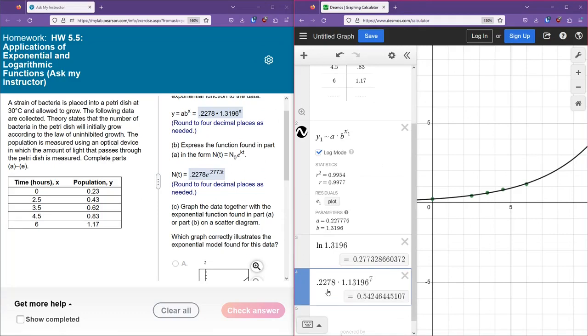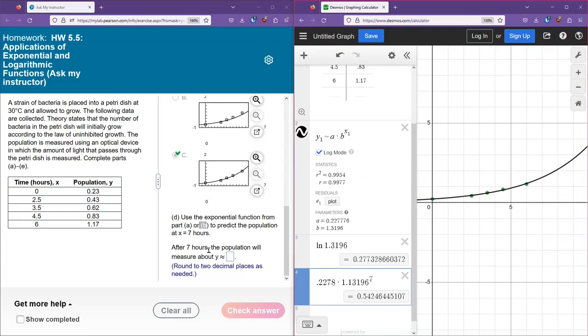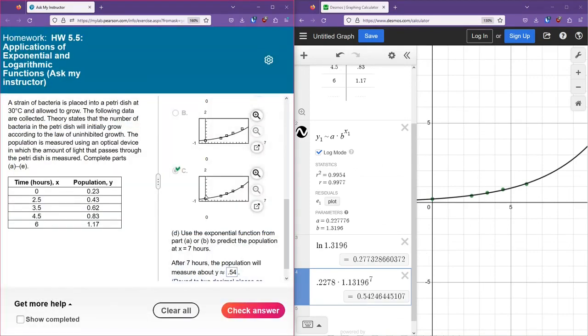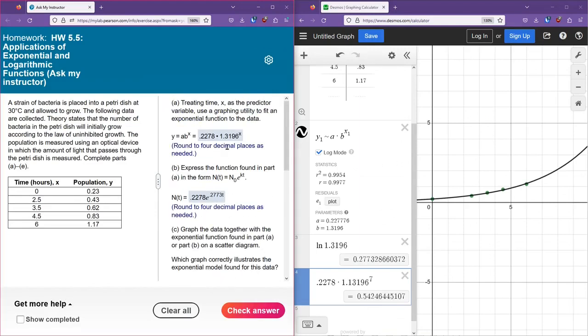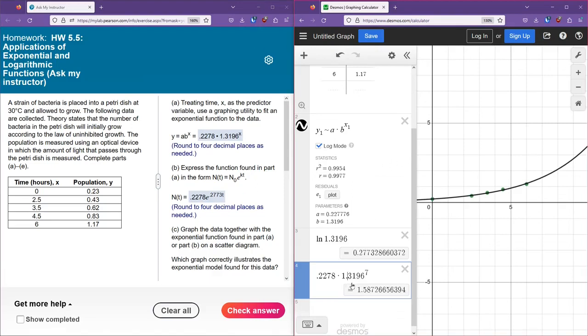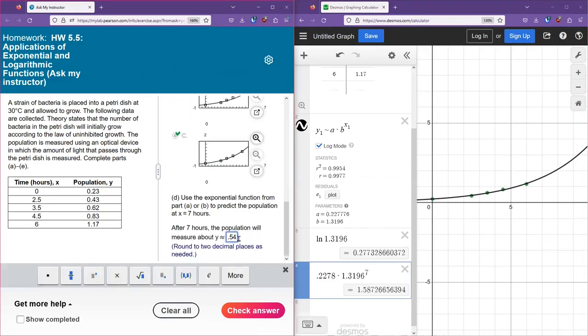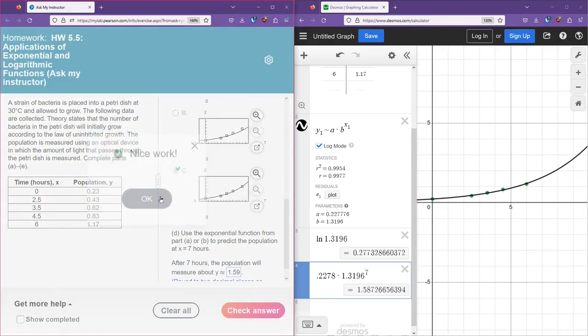Let's type in our model 0.2278 times 1.3196. And we're going to raise this to the seventh power because we want to let x equals 7 for this question. So that gives us 0.54. We want to round to two decimal places. That's 0.54. Okay. So we've got that being incorrect. Let me double check that I typed everything correctly. I've got one point. I've got an extra one there. 1.3196. Okay. That's a little bit better. So now we've got 1.59 as our predicted value.